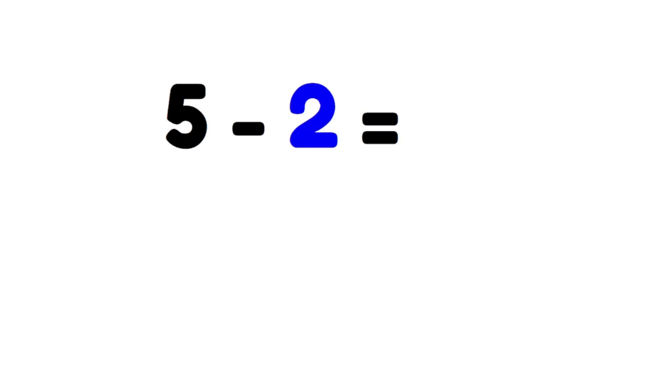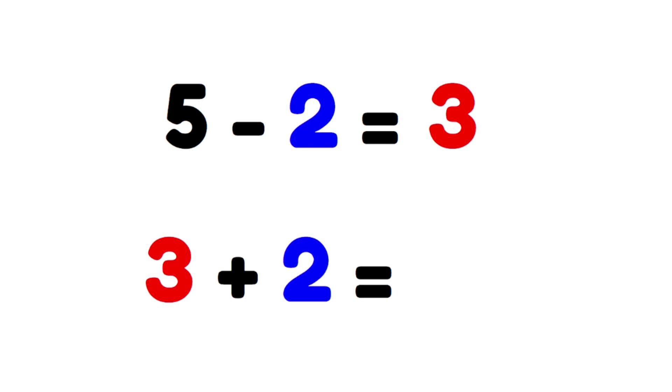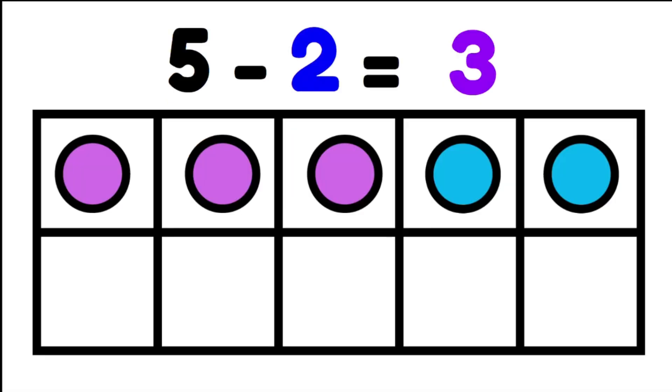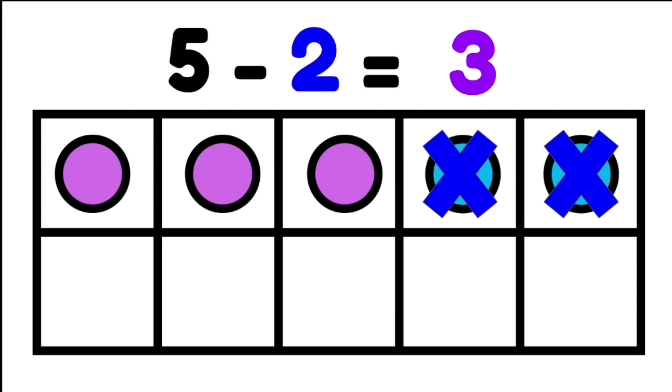Five take away two is three. I can use this knowledge to help me solve another problem. Three plus two. Let's add a picture to show what's happening. If I have five marbles in my tens frame and I take two blue marbles away, I have three left. If I then reverse what I've done,